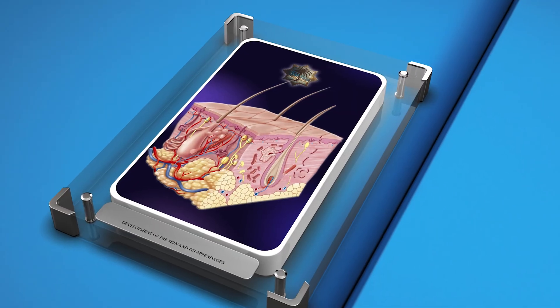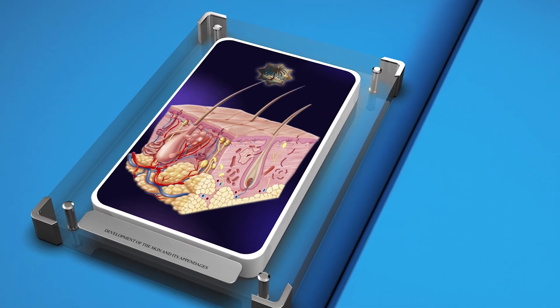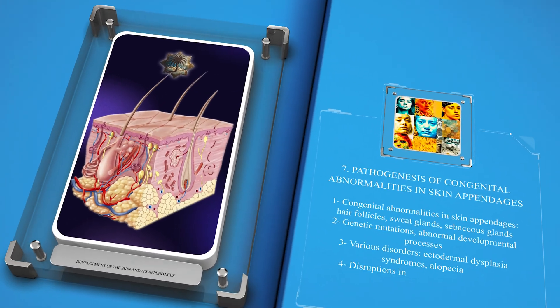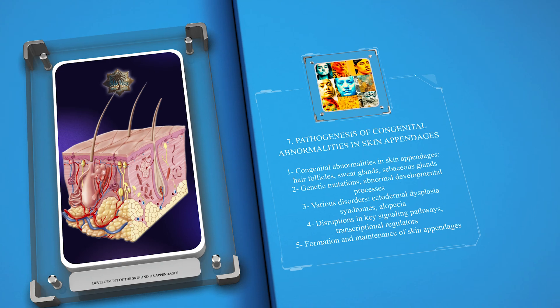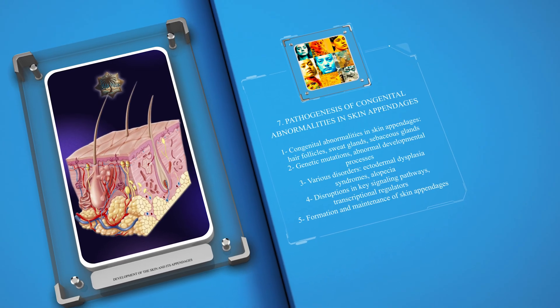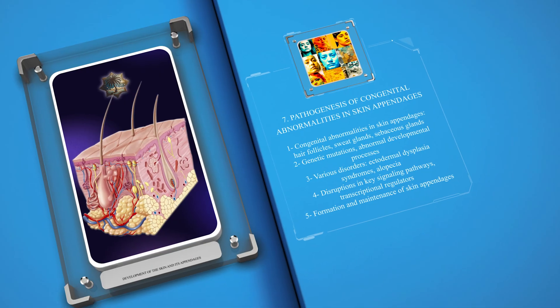Congenital abnormalities in skin appendages, such as hair follicles, sweat glands, and sebaceous glands, can result from genetic mutations and abnormal developmental processes. These abnormalities can manifest as various disorders, including ectodermal dysplasia syndromes and certain types of alopecia.